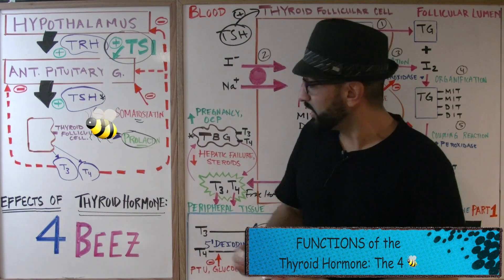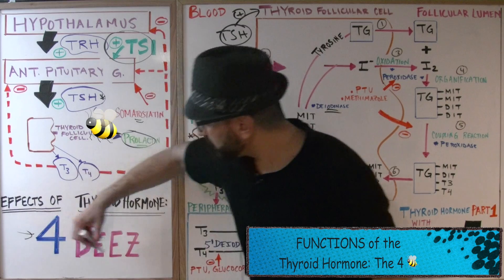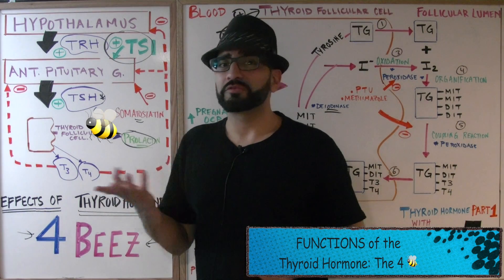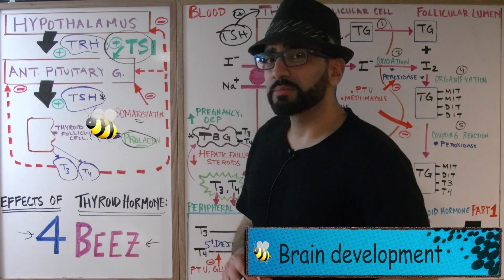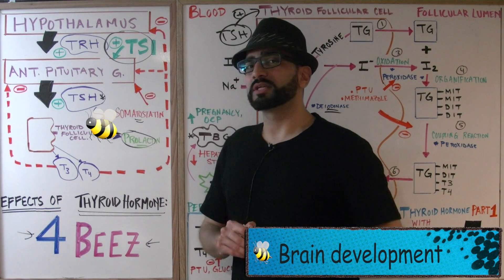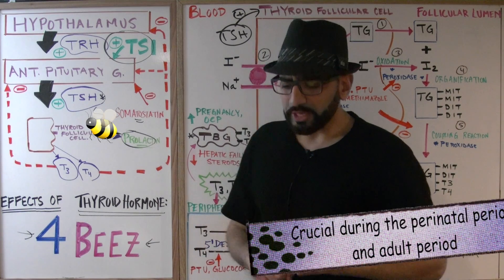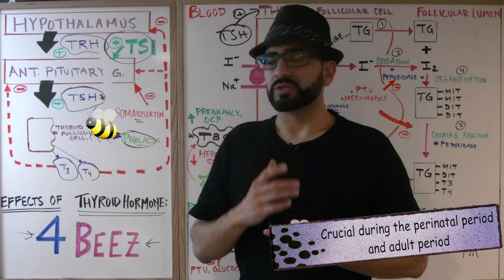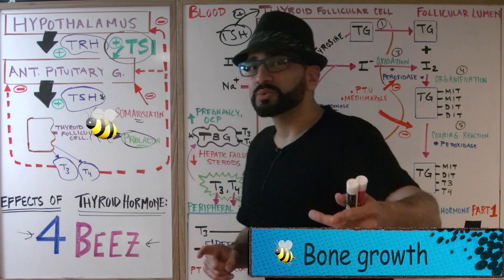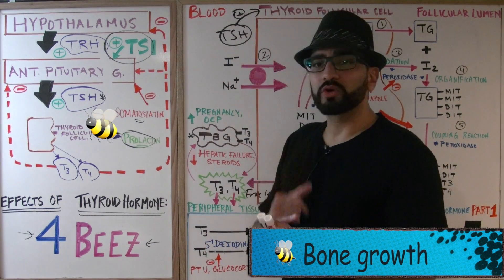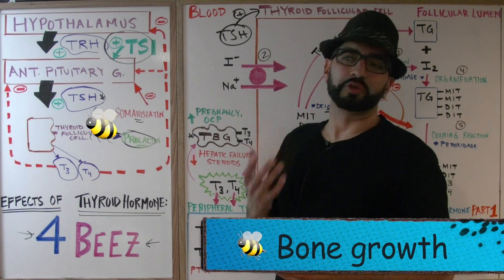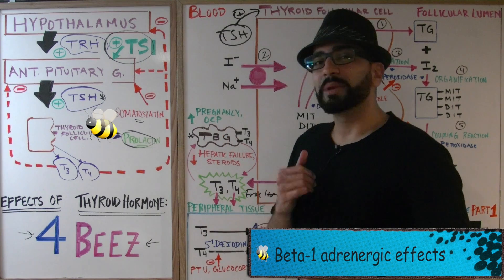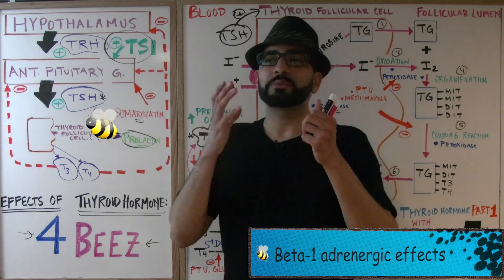The third concept is the effects of thyroid hormone. We have a nice mnemonic: the four B's. Bumblebee number one: brain maturation — thyroid hormone contributes to brain maturation in the perinatal period as well as adulthood. The second B is bone growth — the thyroid hormone helps out the growth hormone, though growth hormone remains the most important hormone for growth.